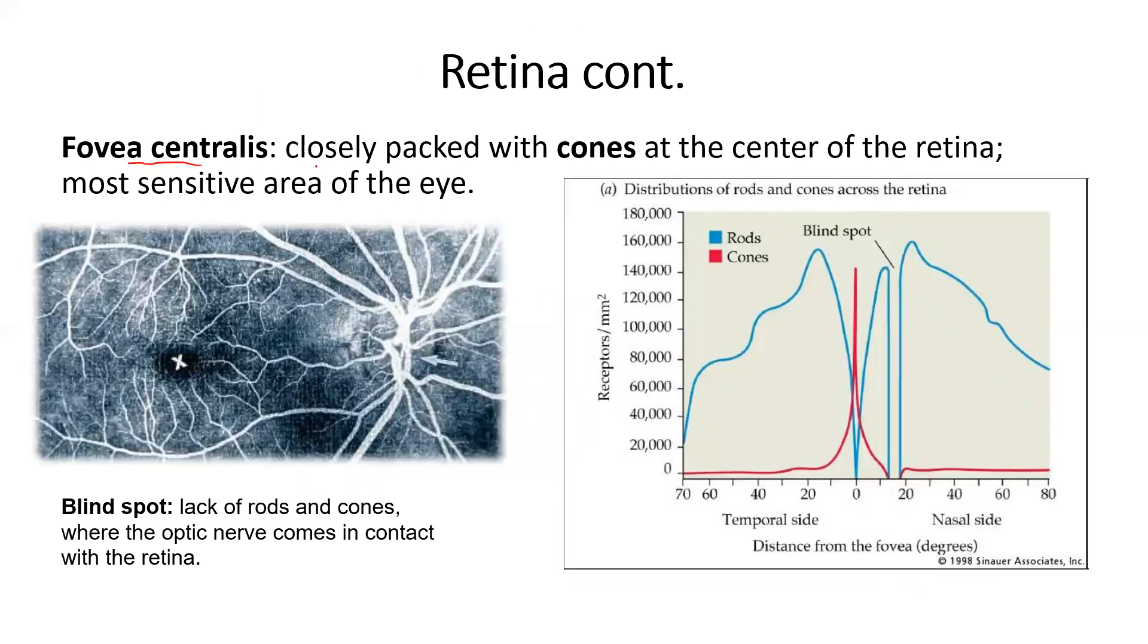The fovea centralis is closely packed with cones at the center of the retina. Most sensitive area of the eye. Distribution of rods and cones. The center, we have most of the cones. Look. Almost none. And then, boom. This is the fovea centralis right here.